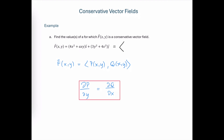Let's rewrite this vector field using pointy bracket notation just to clean it up a bit. This first component is our P function, and the second component is our Q function.